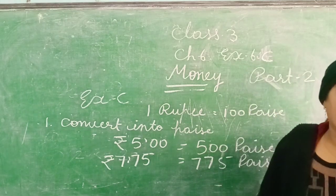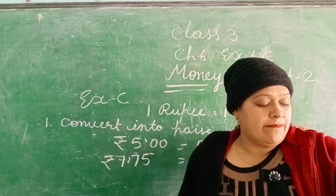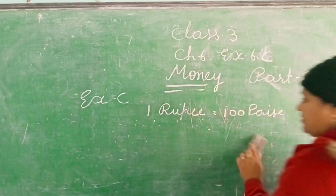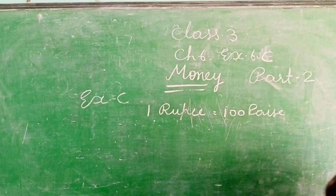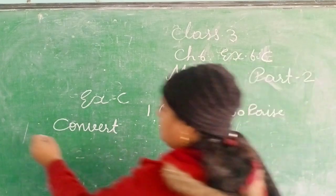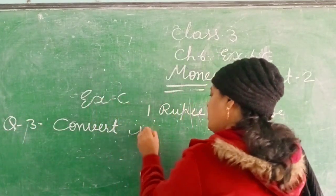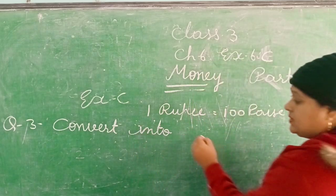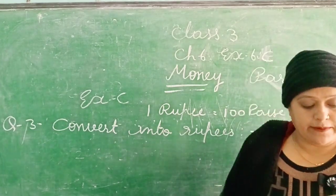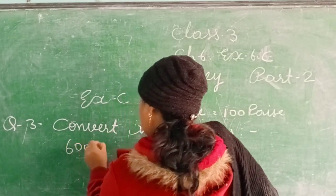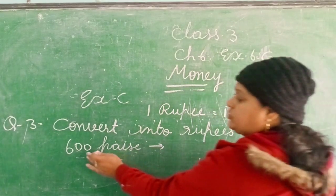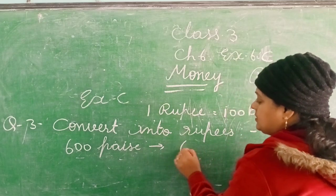Next: convert into rupees. Ab humein kya karna hai? Paise diye gaye hain, unko rupees mein convert karna hai. 600 paise diye gaye hain. Isko rupees mein karte hain — jo do zeros hain, inko remove karenge. 6 rupees ho jaega.